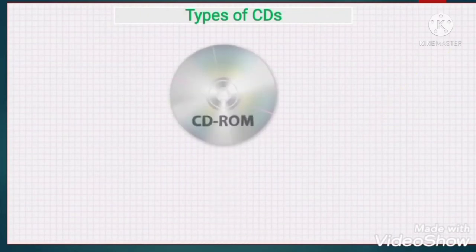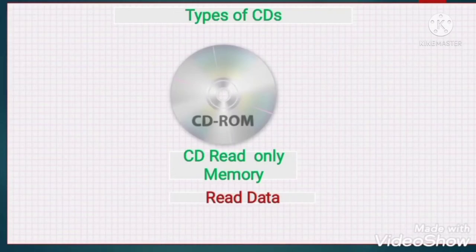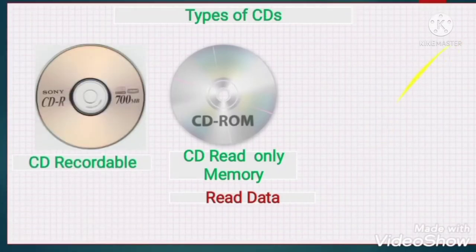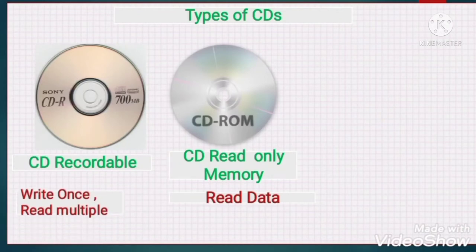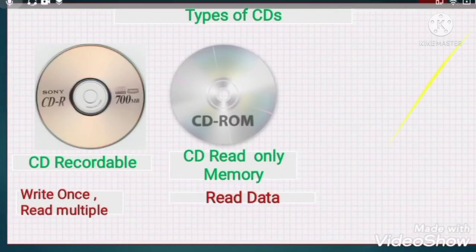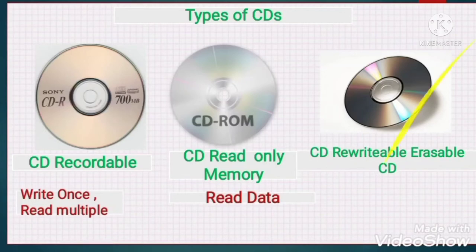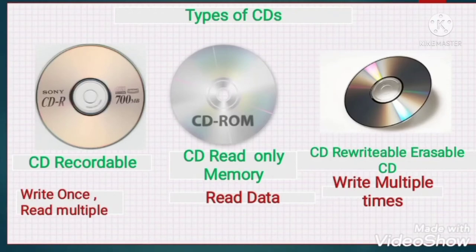There are three types of CD: The first is CD-ROM — CD Read Only Memory — which can only read data, no writing. The second is CD-R — CD Recordable — which can be written once but read multiple times. The third is CD-RW — CD Rewritable/Erasable — which can be written and erased multiple times.